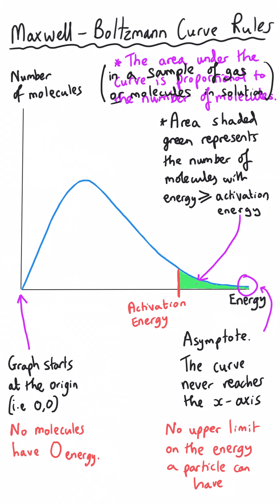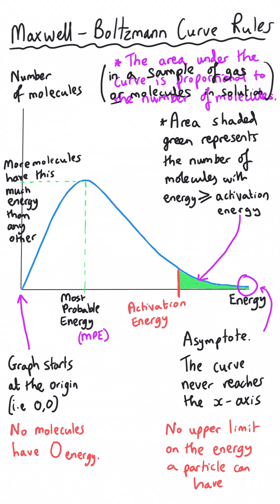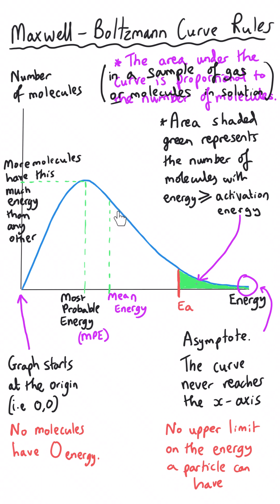The peak of the graph is the most probable energy — this is the energy value that is most likely for a randomly chosen gas molecule. However, because the curve is not a symmetrical hill — there's more curve to the right of the peak than to the left — the mean amount of energy is likely to be somewhere to the right of the peak. So that is the mean average energy that the molecules are going to have. Those are the key features of Maxwell-Boltzmann curves that you need to understand.